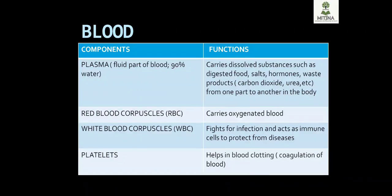Red blood cells contain hemoglobin and are responsible for transporting oxygenated blood and oxygen transport. White blood cells, or white blood corpuscles, are immune cells that fight infection.